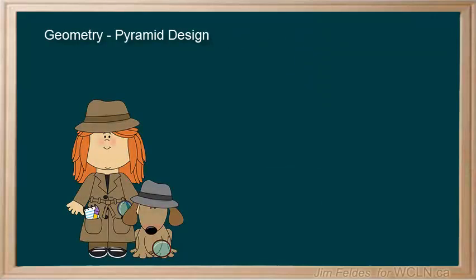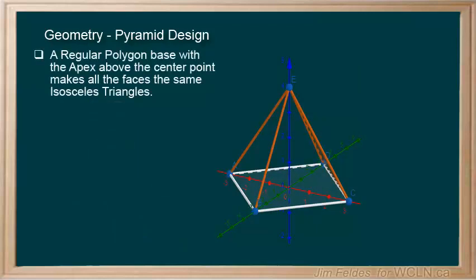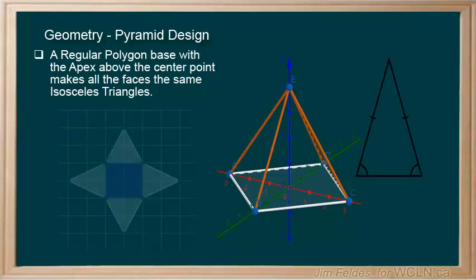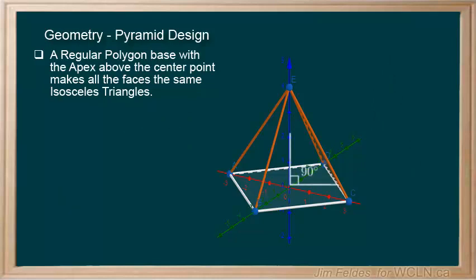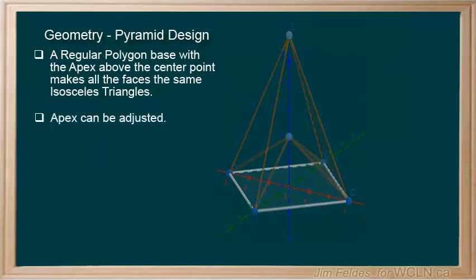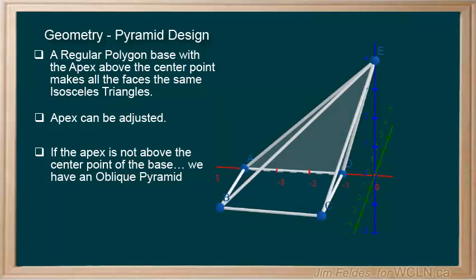So what are some of the things we should watch for when investigating pyramid shapes? A regular polygon base with the apex above the center point — as seen here with the blue vertical line — makes all the faces the same isosceles triangle. The image here shows a regular rectangular pyramid with its four sides laid out flat, showing four isosceles triangles. This is the only time we get a right angle between the base and the apex, so if the apex is above the center point, we have a right pyramid. We can extend or shorten the height of our pyramid to pretty much any level. And if the apex is not above the center point of the base, we have an oblique pyramid.